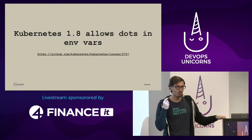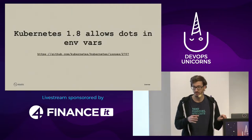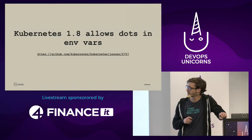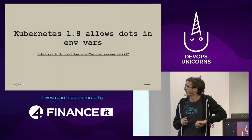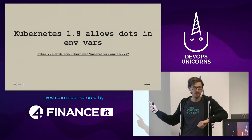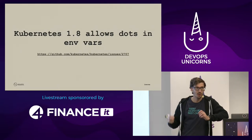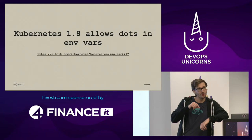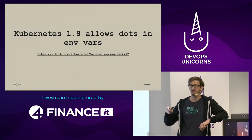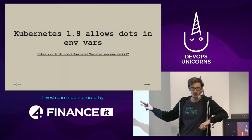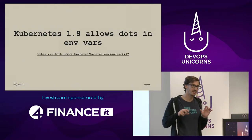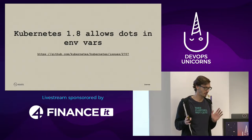One issue for us for a long time was that you could not use dots in environment variables in Kubernetes before version 1.8. The way we configure lots of stuff is through dots in environment variables. So before 1.8, you couldn't really use our images with Kubernetes. But since then it's generally possible.